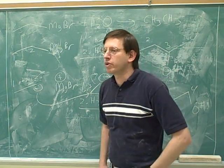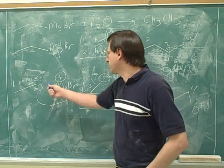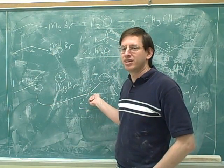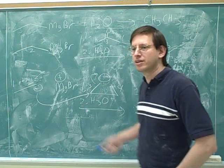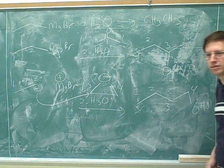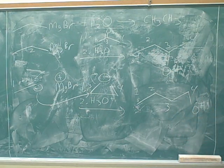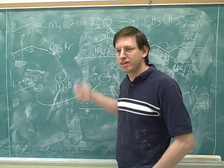Actually, let's review that. What are the two ways to form carbon-carbon bonds? One way is when a Grignard attacks an epoxide. And what's the other way? A Grignard attacks a carbon that is partially positive — a carbonyl. That's right. Both ways are on the board.